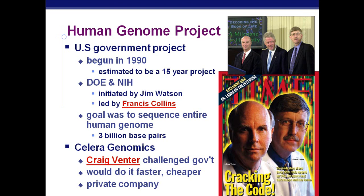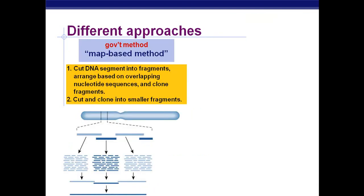Then in 2001, the first draft of the human genome. And in 2003, a 'finished' sequence of the human genome — though remember, we can't really sequence telomeres and centromeres, so it's pretty close to being finished. There were different approaches from the government versus the private method.